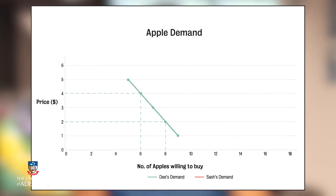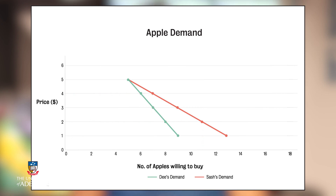Here is Sash's demand for apples. If the price is $4, he will buy seven apples. If the price is $2, he'll buy 11. In this simplified market with two consumers, the sum of the individual quantities demanded at these prices results in the aggregated or group market demand for apples.